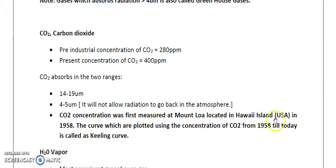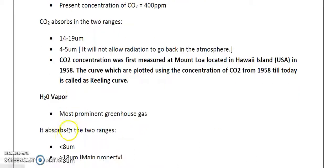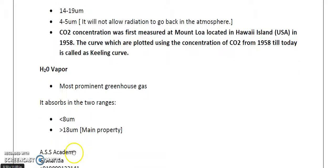Water vapor is the most prominent natural greenhouse gas. It absorbs radiation in two bands: one at less than 8 micrometers and another at more than 18 micrometers. The absorption at more than 18 micrometers is the main and major absorption property of water vapor.